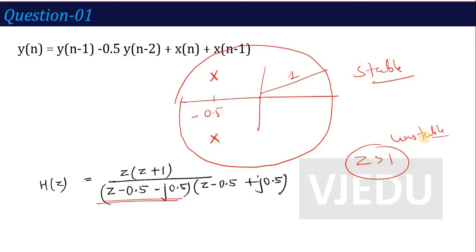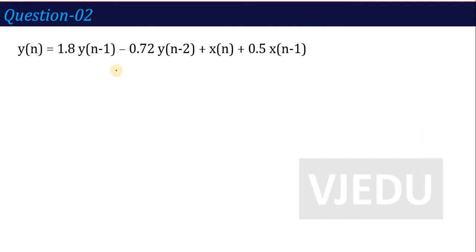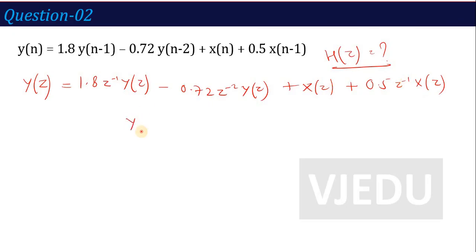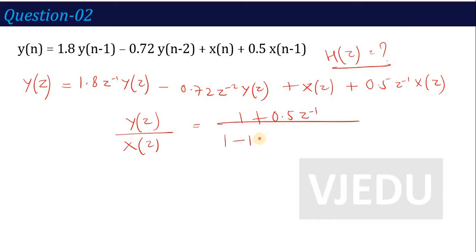Let's take another example for better understanding. The second difference equation is: y(n) = 1.8·y(n-1) - 0.72·y(n-2) + x(n) + 0.5·x(n-1). Let's find the system function H(z) and check stability. Applying Z-transform: Y(z) = 1.8z⁻¹Y(z) - 0.72z⁻²Y(z) + X(z) + 0.5z⁻¹X(z). Grouping terms, H(z) = Y(z)/X(z) = (1 + 0.5z⁻¹) / (1 - 1.8z⁻¹ + 0.72z⁻²). If only H(z) was asked, this is the answer.